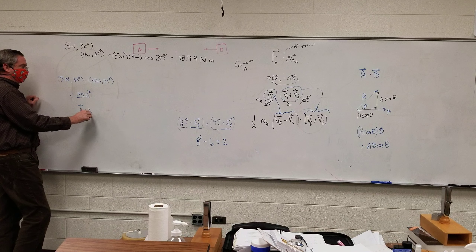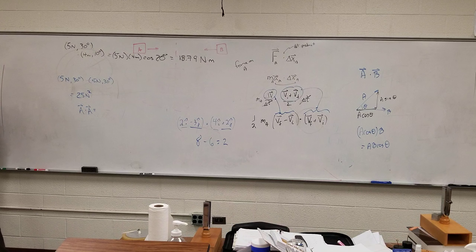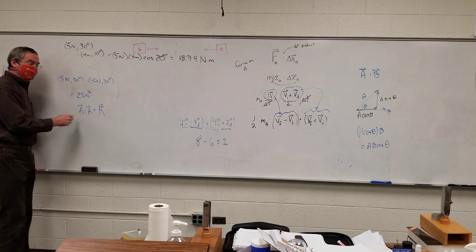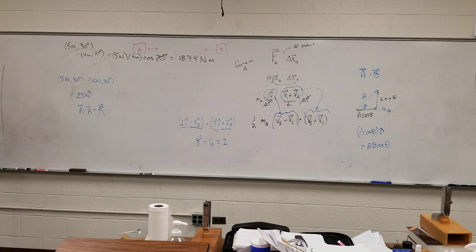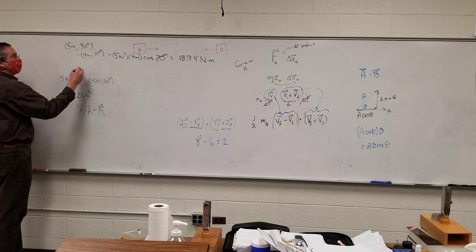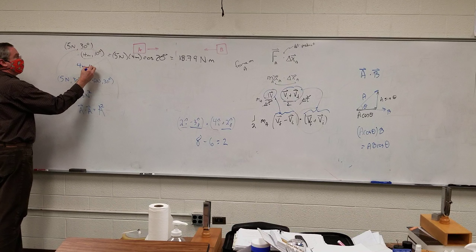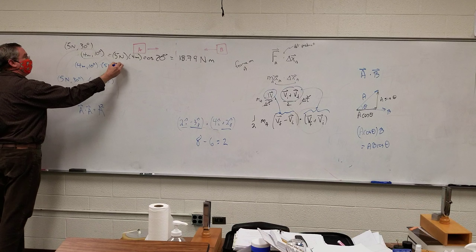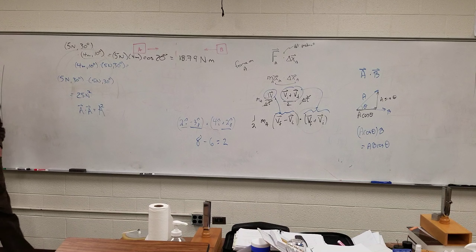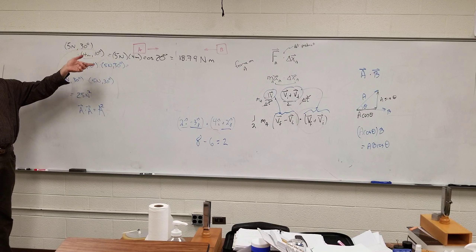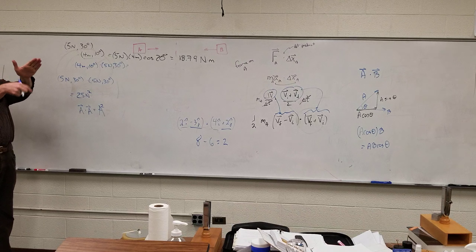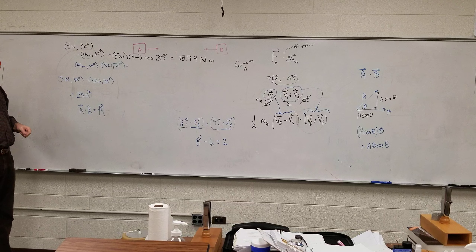If I have any vector dot product with itself, that's going to be the magnitude squared. Because the angle between a vector and itself is always 0 degrees, you end up multiplying the magnitude squared. Also, the commutative property holds — if I flip the two vectors around, it would be the same thing, because cosine of 20 degrees equals cosine of negative 20 degrees. Cosine is an even function.